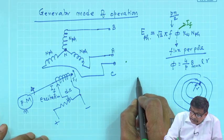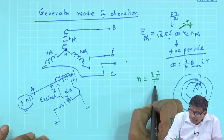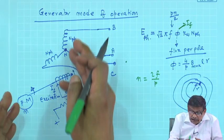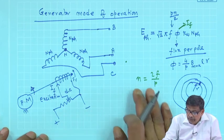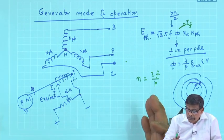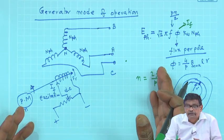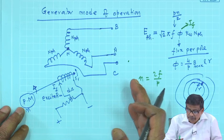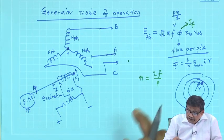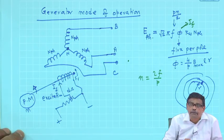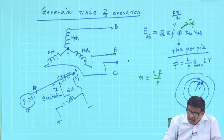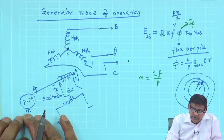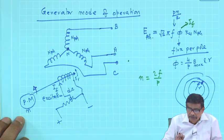You can generate any frequency: n = 2f/P. For example, for a 4-pole machine to generate 50 Hz, the speed is 1500 RPM. For a 2-pole machine, you must run the prime mover at 3000 RPM to generate 50 Hz. The frequency consideration decides what your prime mover's speed should be, if you know the number of poles of the generator.